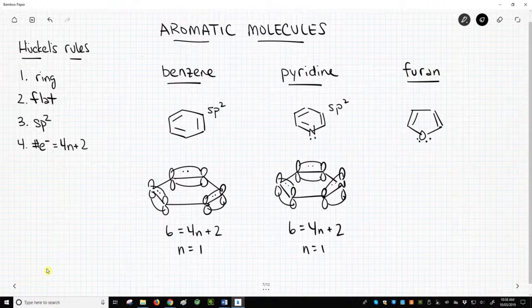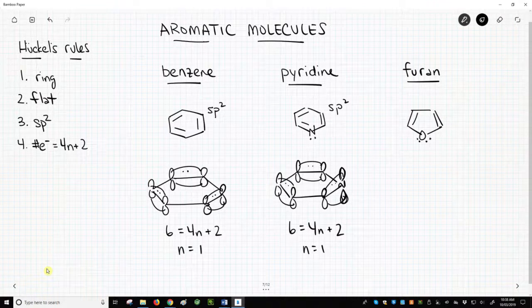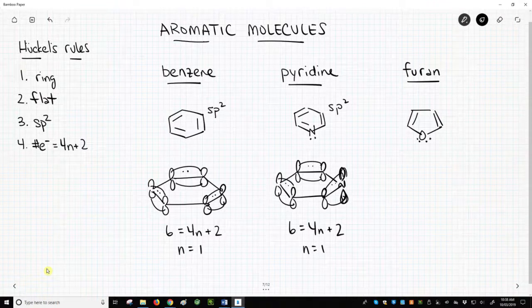What do we do with this nitrogen lone pair? Where is that nitrogen lone pair? Can we count those towards aromaticity? No. The nitrogen has one p orbital. I'm kind of retracing it here. That p orbital is making a pi bond.